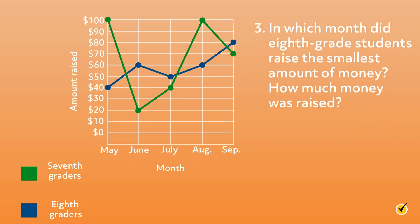In which month did 8th grade students raise the smallest amount of money? How much money was raised? We can find the answer by examining the blue markers representing the 8th grade data points in each month. The month that the marker is placed the lowest is in May, when they raised $40.